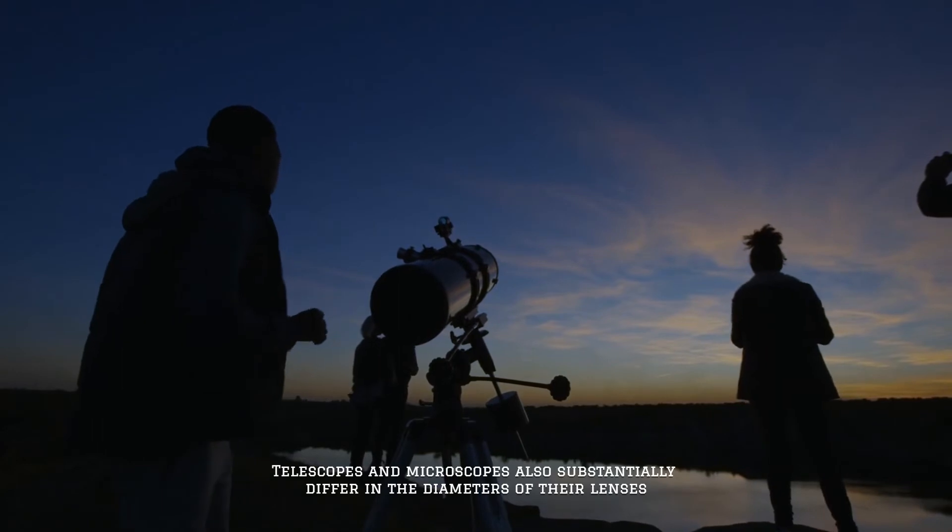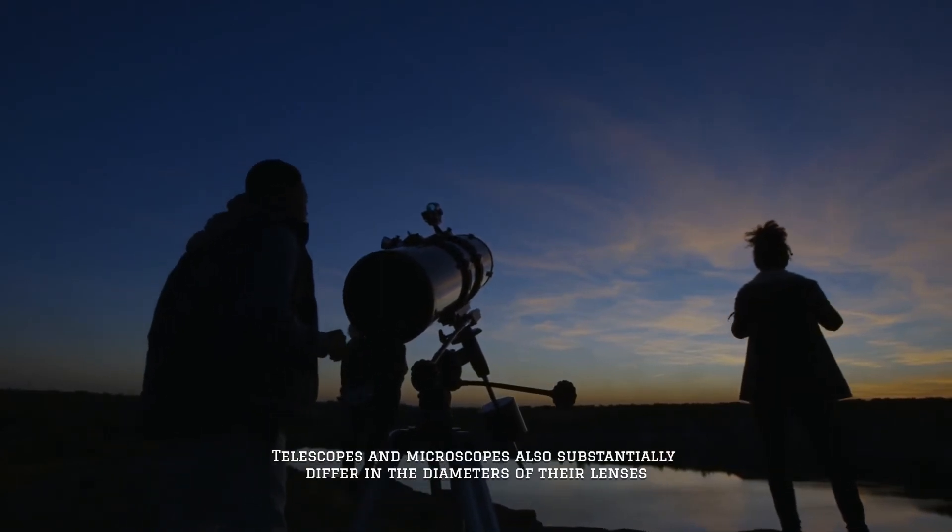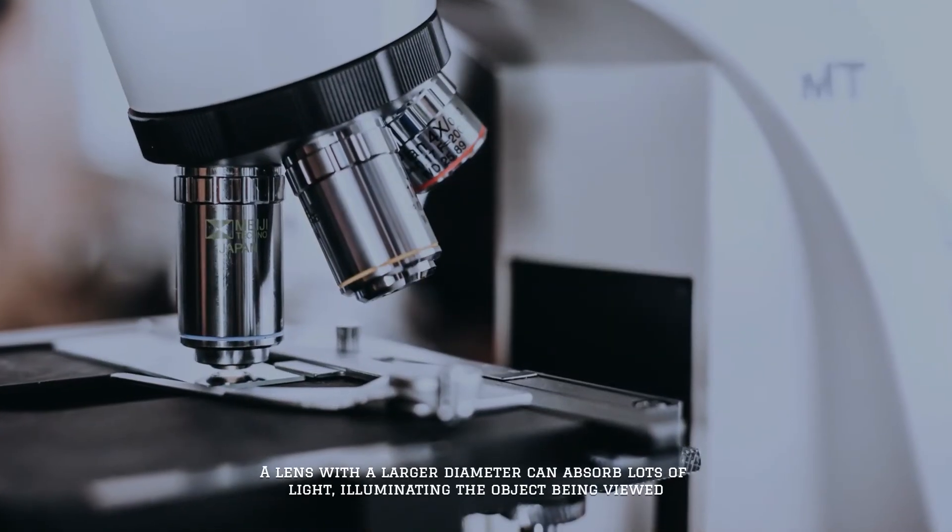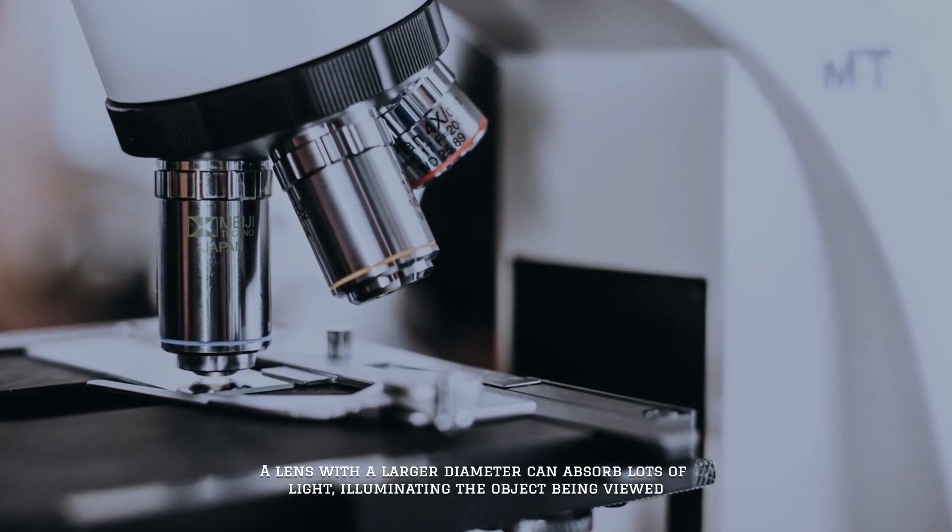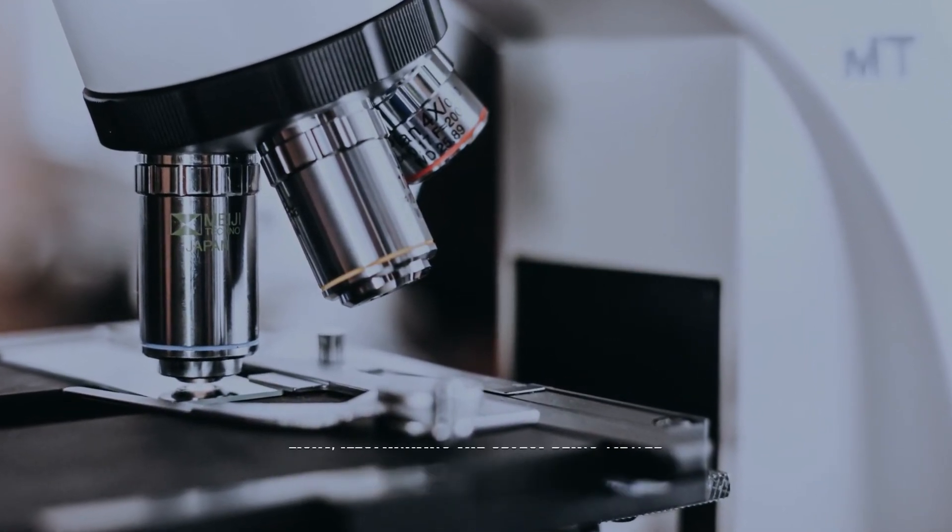Telescopes and microscopes also substantially differ in the diameters of their lenses. A lens with a larger diameter can absorb lots of light, illuminating the object being viewed.